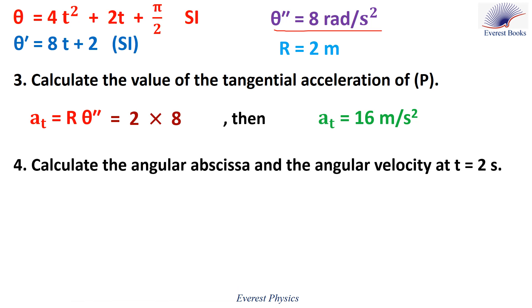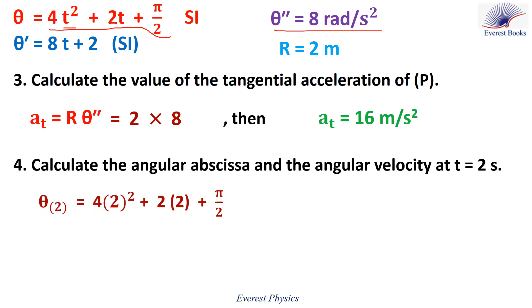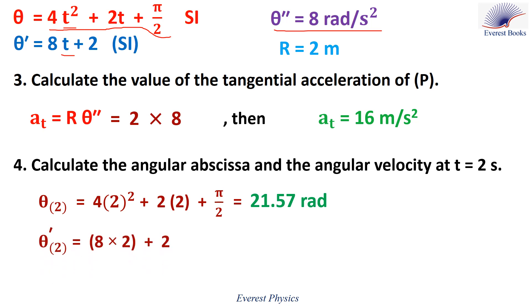Number four: calculate the angular abscissa and the angular velocity at time t = 2 seconds. The angular abscissa is given by 4t² + 2t + π/2. Replacing t by 2 seconds: theta of 2 equals 4 times 4 plus 4 plus π/2, which equals 21.57 radians. Similarly, replacing t by 2 seconds in theta prime: theta prime of 2 equals 8 times 2 plus 2, which equals 18 radians per second.